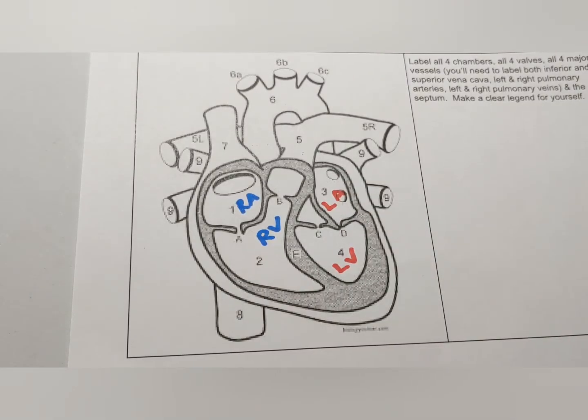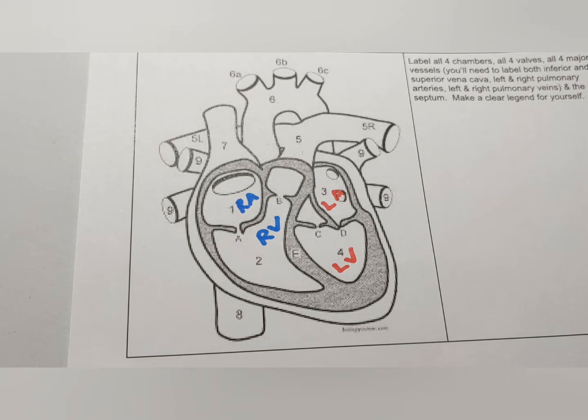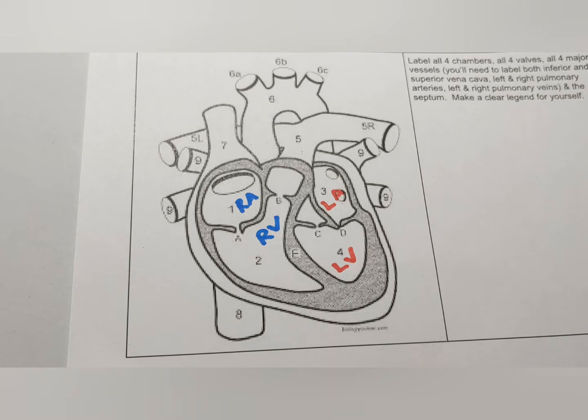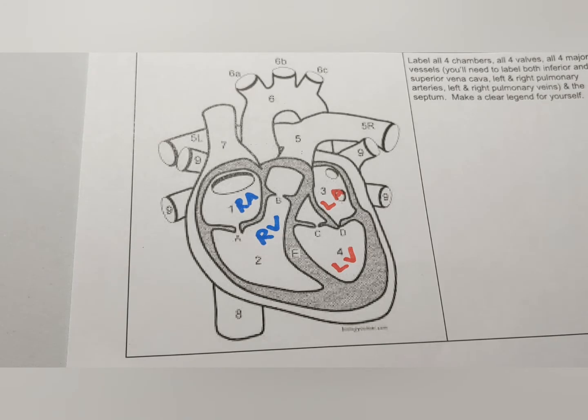We're now going to get to some structures that you can only see on the interior of the heart. So far everything that we've seen on the inside we could also see on the outside. Or at least with the chambers we could estimate where the chambers were from the outside.